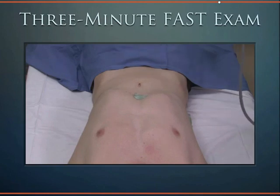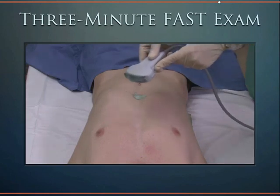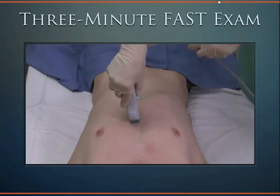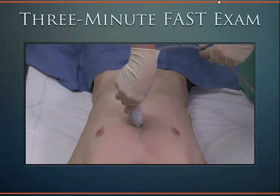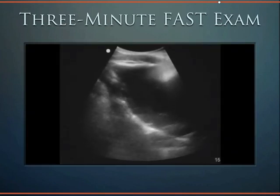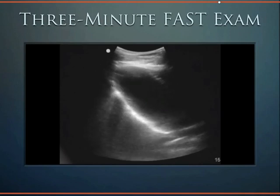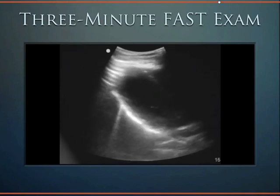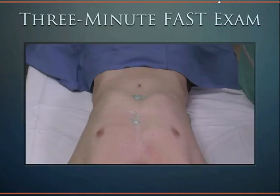The next window of the FAST exam is the peristernal long window of the heart. Place the probe with the indicator towards the patient's left hip. Place the probe right on the sternum and then slide off until you see the long axis come down the screen. You have now obtained a long axis view of the heart with the indicator towards the patient's left hip.